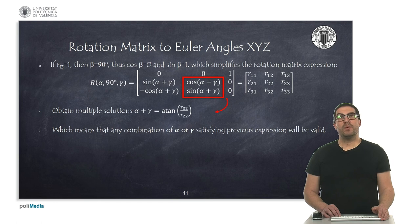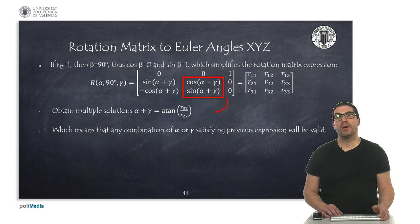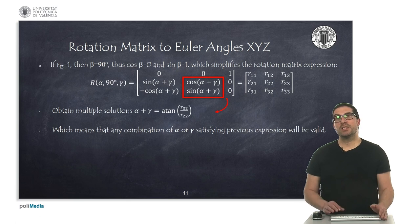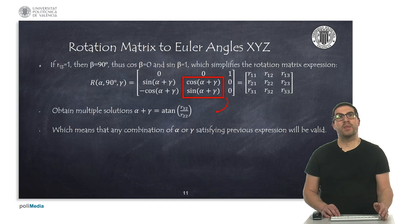So when beta is 90 degrees, this actually corresponds to a gimbal-lock situation, and indeed we lose a degree of freedom. We can easily see this by just substituting beta with 90 degrees, and after some maths we can obtain the analytic expression of the resulting rotation matrix, and we can see indeed